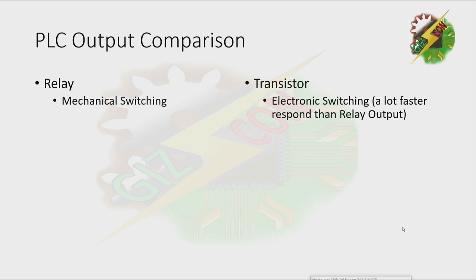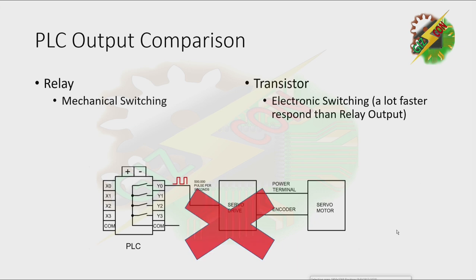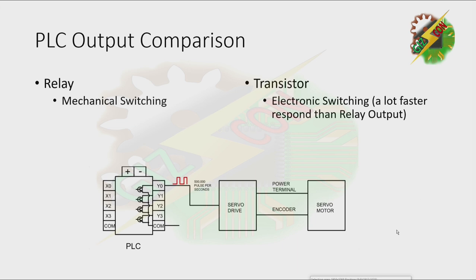For some applications, relay is enough — why would you need a very fast response? For example, if we need to control a servo motor, we need to send pulses — let's say 500,000 pulses per second. Relay output cannot provide 500,000 pulses per second because it only performs mechanical switching, which is slow, meaning the circuit won't work. But if we use a transistor, which performs electronic switching, 500,000 pulses per second is possible. That's one of the key advantages of using a transistor instead of a relay.